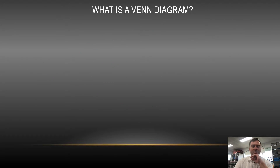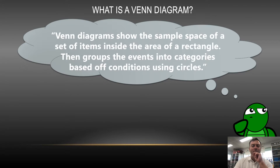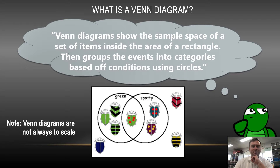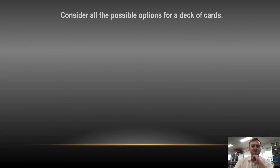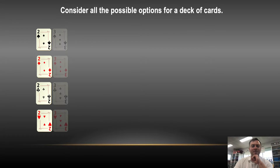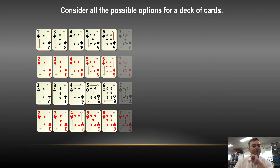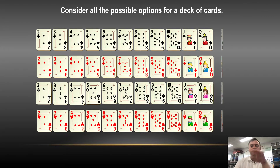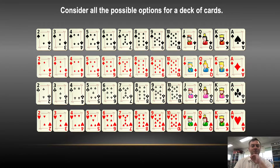Then we did a quick little Venn diagram. A Venn diagram is basically a square box with circles in it, and the circles represent the different events you're going to deal with. So all the possible combinations for a deck of cards — you have 52 different cards with four different suits, and then 13 cards in each suit, ranging from 2 to 10, and then the Jack, Queen, King, and the Ace.